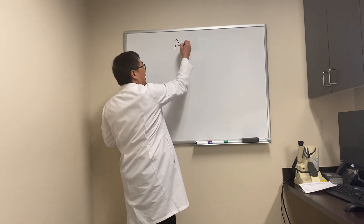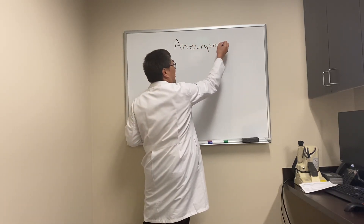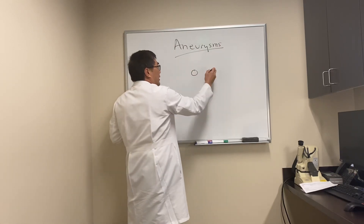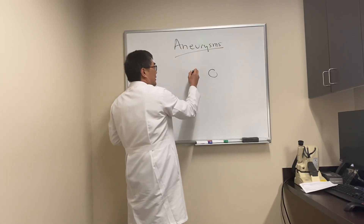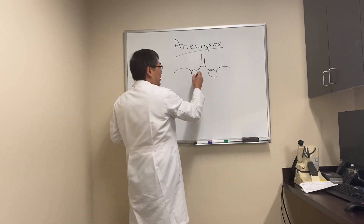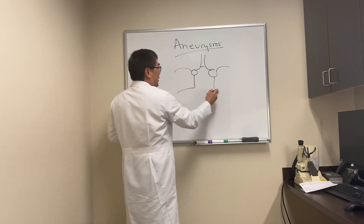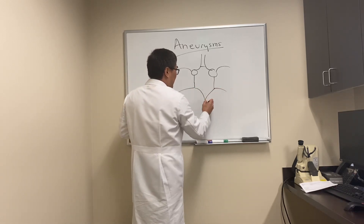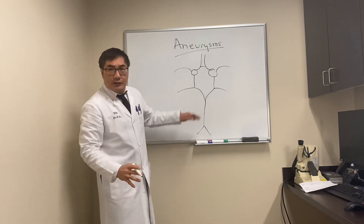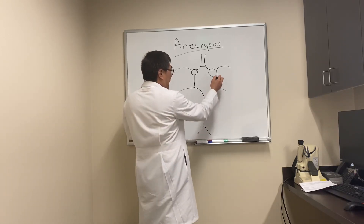Today we're going to be talking about aneurysms and how they're important in neurophthalmology. The circle of Willis is where the aneurysms of importance to us occur, and when dealing with circle of Willis aneurysms, we're really talking about bifurcation aneurysms.